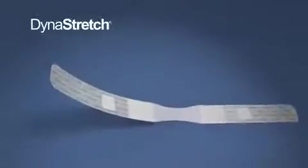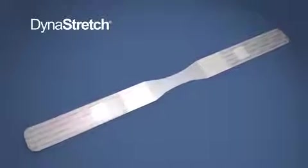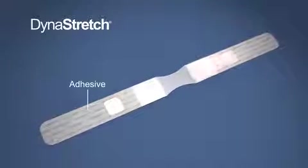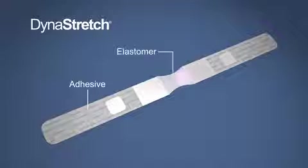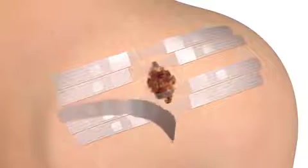Dyna Stretch is an atraumatic preoperative skin expansion device. The soft, stretchable adhesive fabric and the dynamic silicone elastomer both have an inherent elasticity, which allows patient mobility as the device works. The product is applied topically one to two weeks preop and is simple to manage and painless to remove.